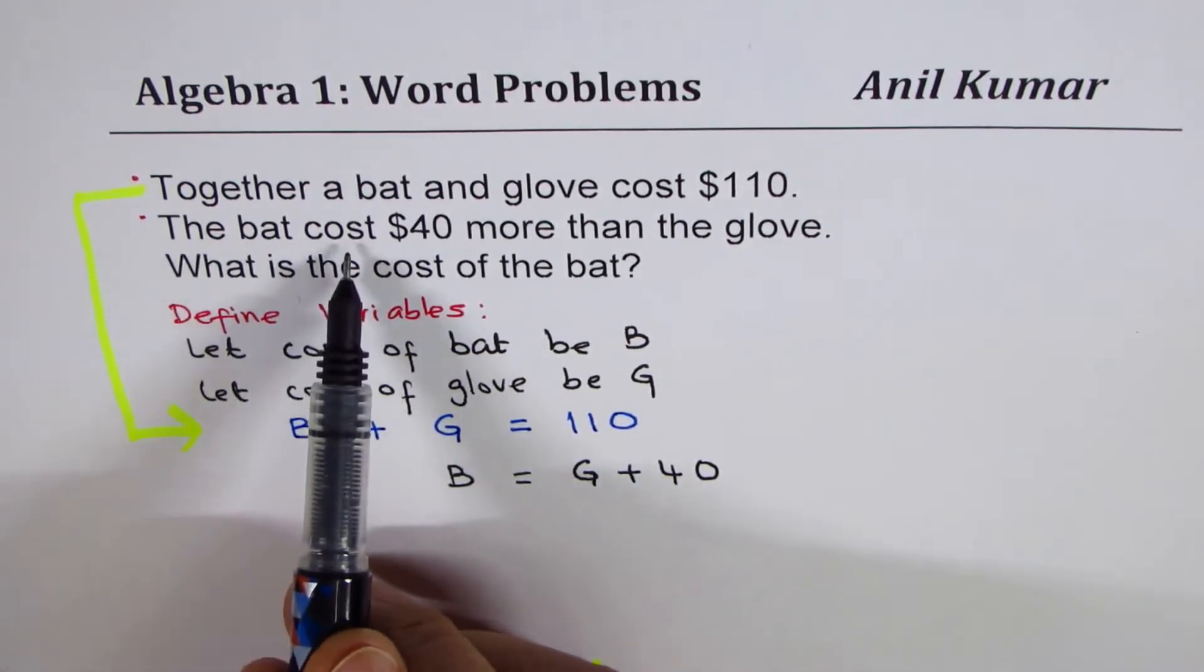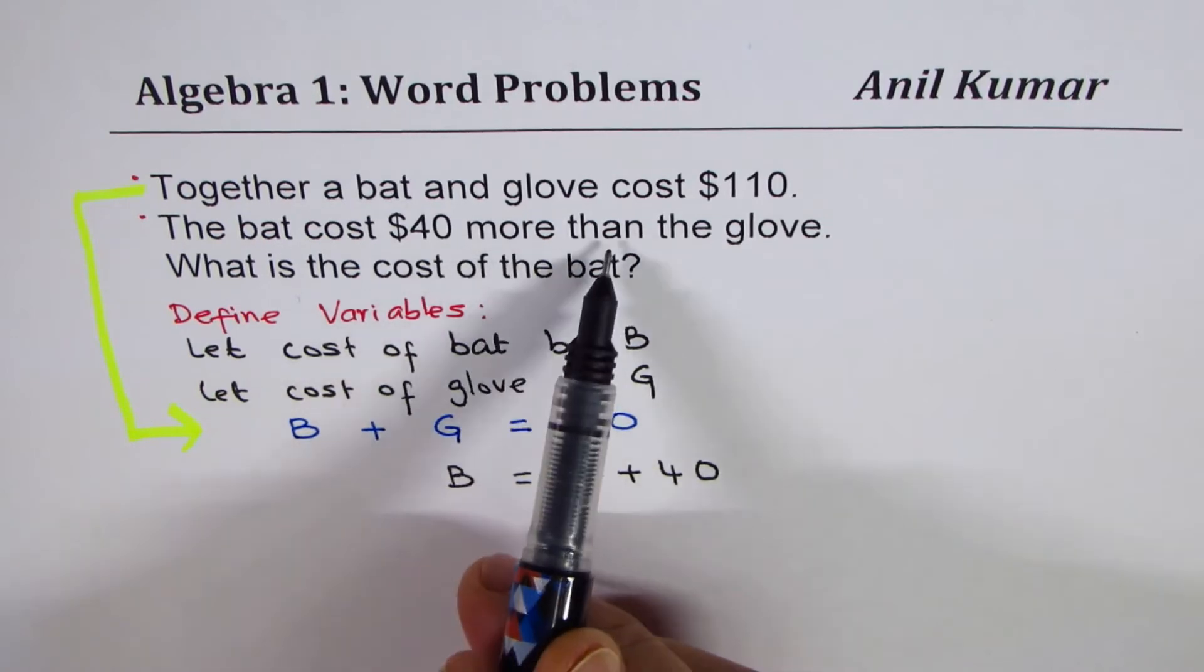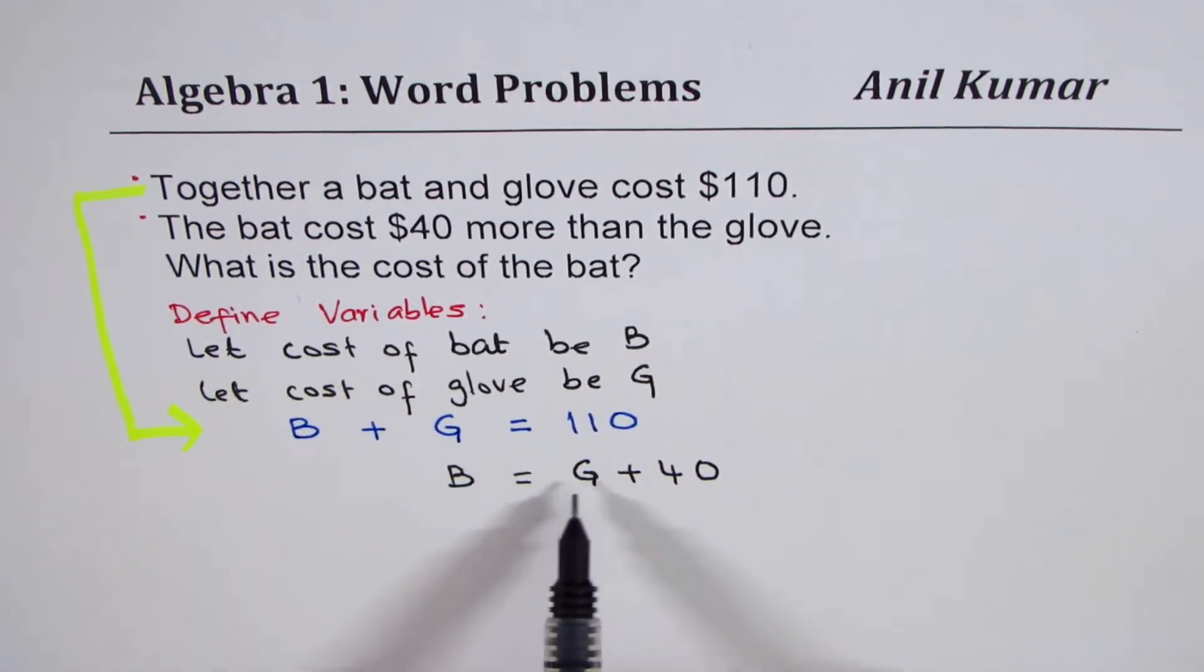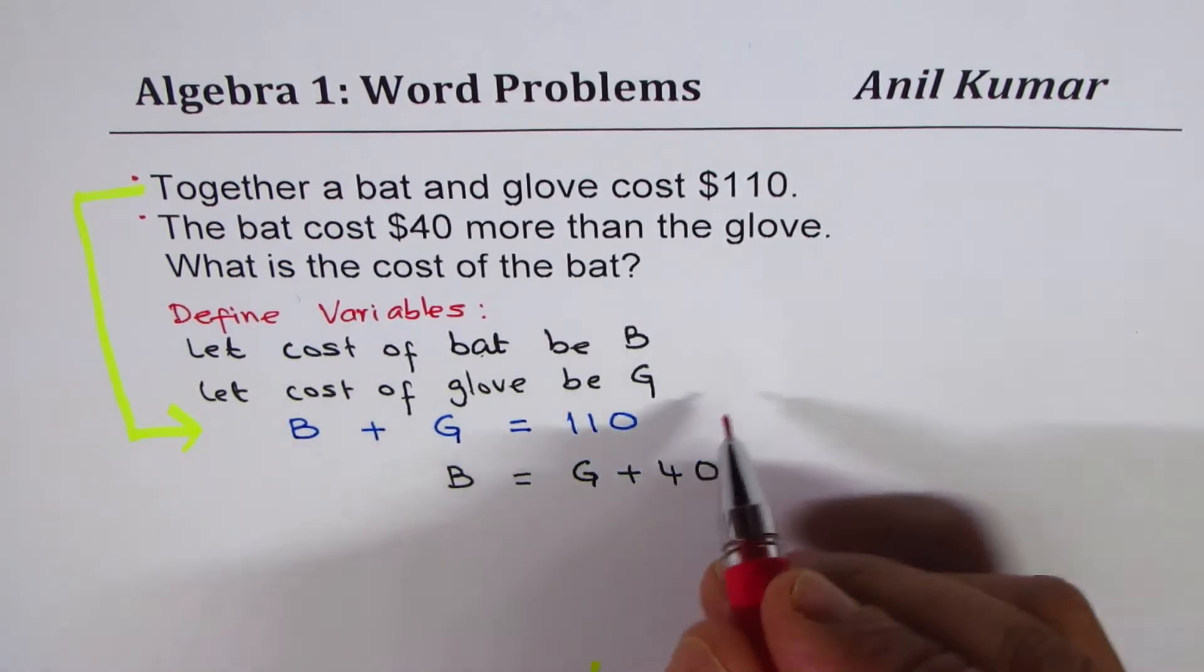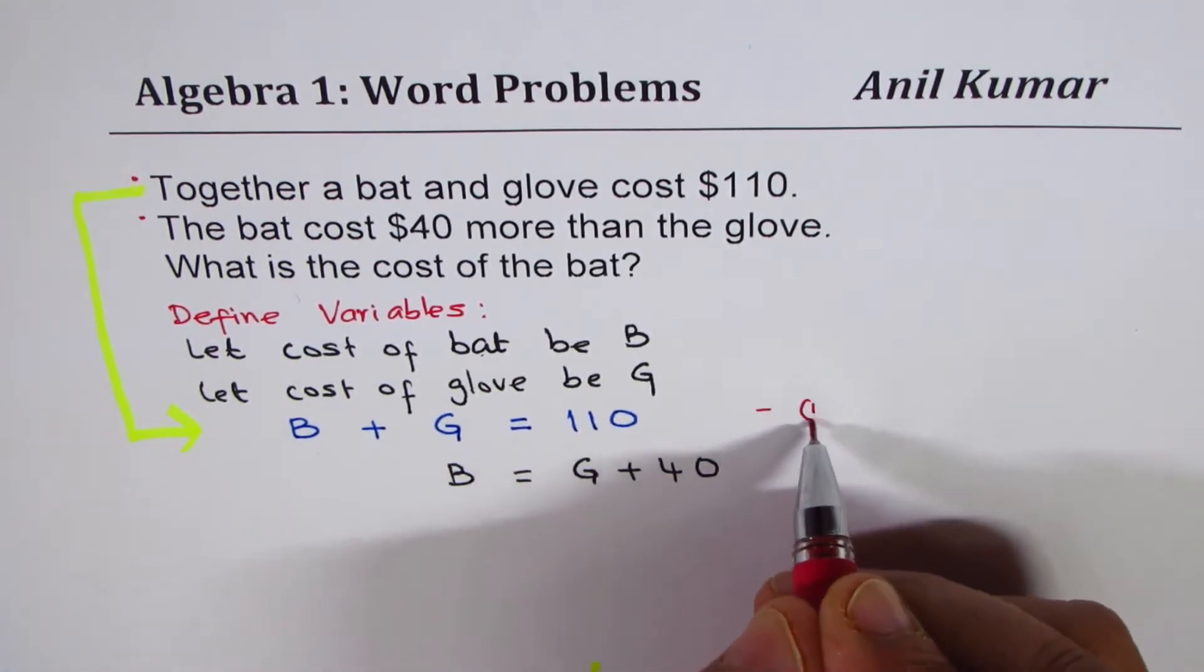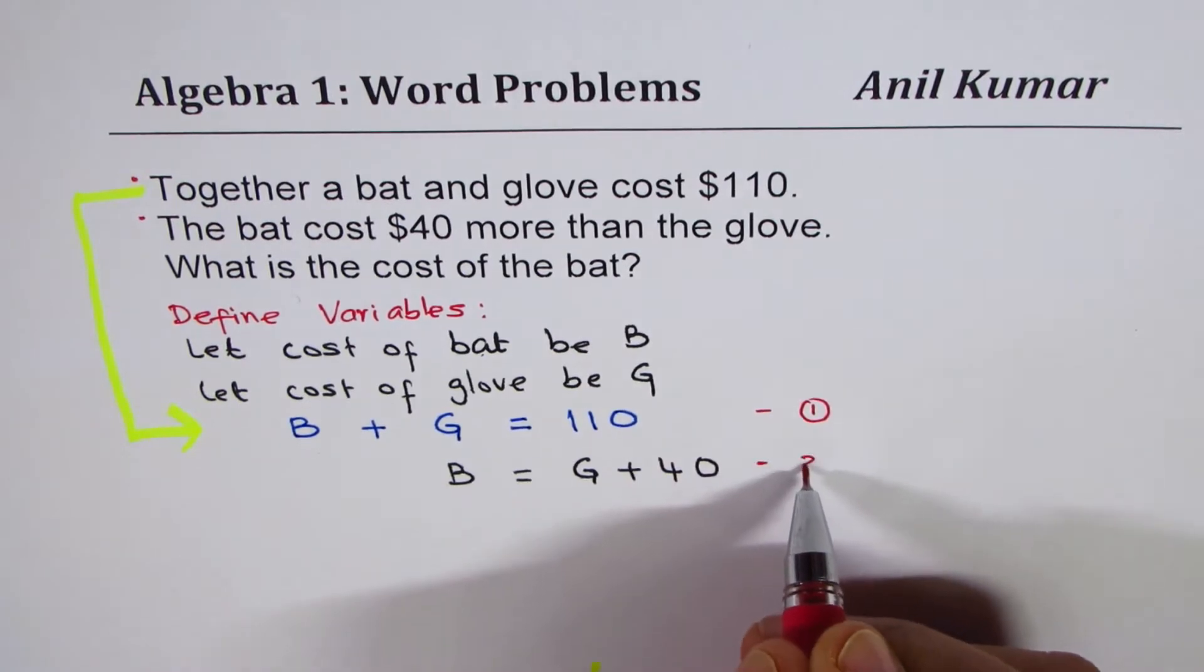The bat costs $40 more than the glove. So, bat equals to gloves plus $40. That is the cost. B is cost of the bat. So, cost of the bat is $40 more than the cost of the gloves. So, we get the second equation. It is a good way to write equations and number them. So, we will say equation one and we will say equation number two.